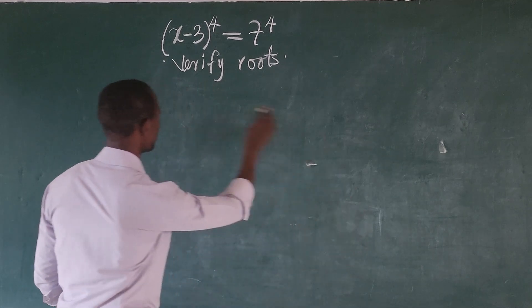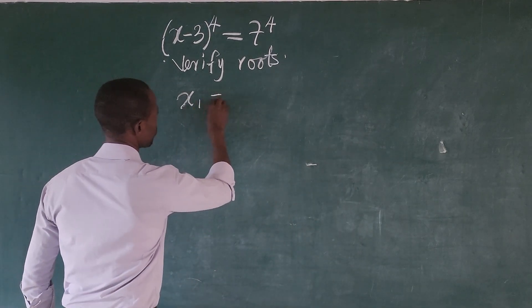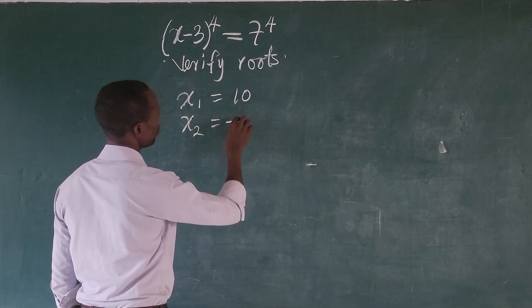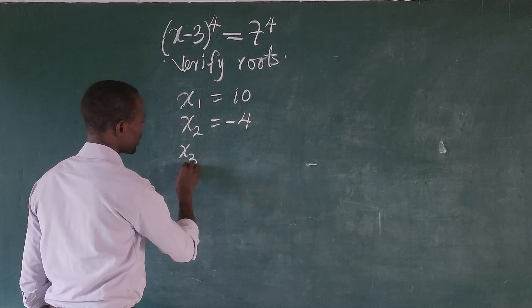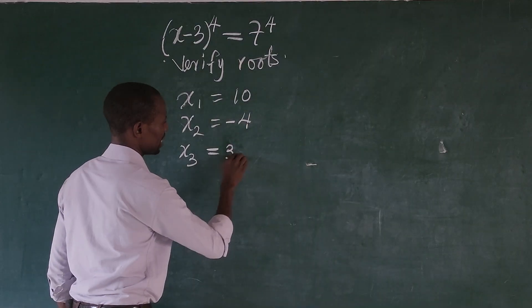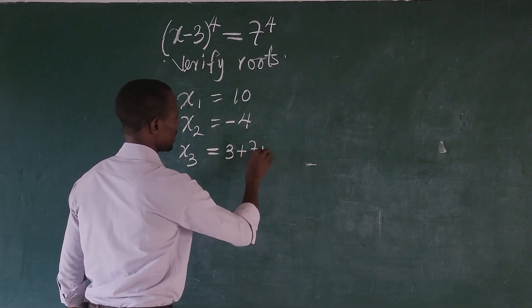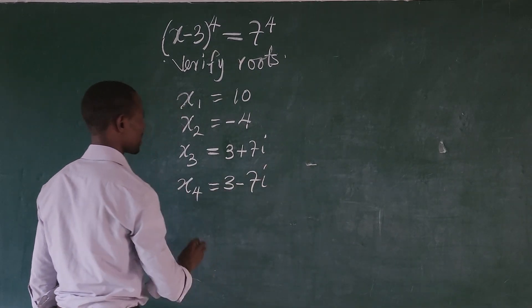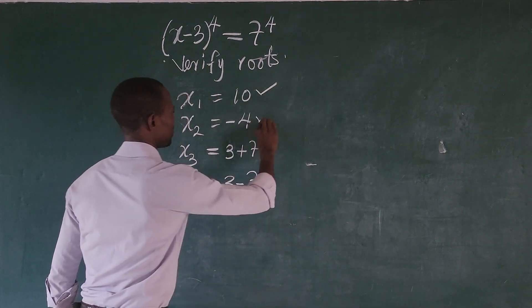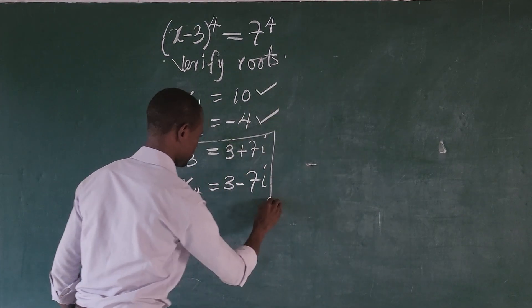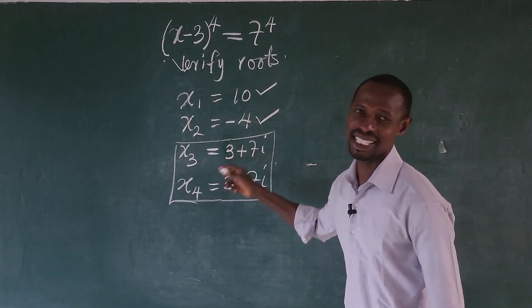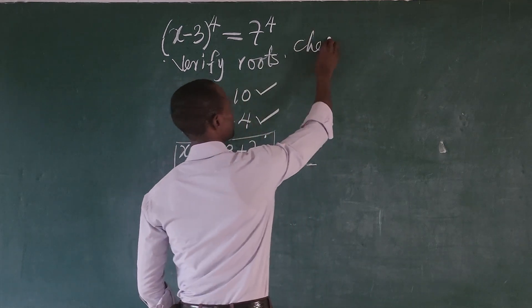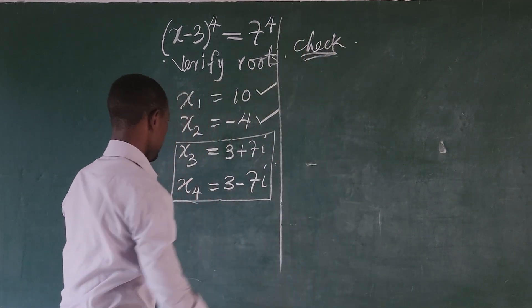So what are the roots to this equation? We got x1 = 10, x2 = -4, x3 = 3 + 7i, and x4 = 3 - 7i. We'll verify all four of these. The imaginary ones require a bit more work, but I believe the real roots are very easy to verify. Let's go straight into checking.